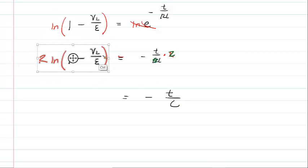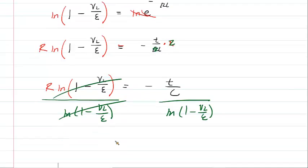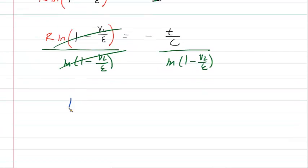And then on the left side, we have this monstrosity here. And then finally, if we divide the monstrosity by the natural log of 1 minus VL over epsilon, and do that on both sides, then on the left-hand side, that will all cancel out, leaving us with the resistance. So it looks like the resistance is going to equal this crazy expression here.